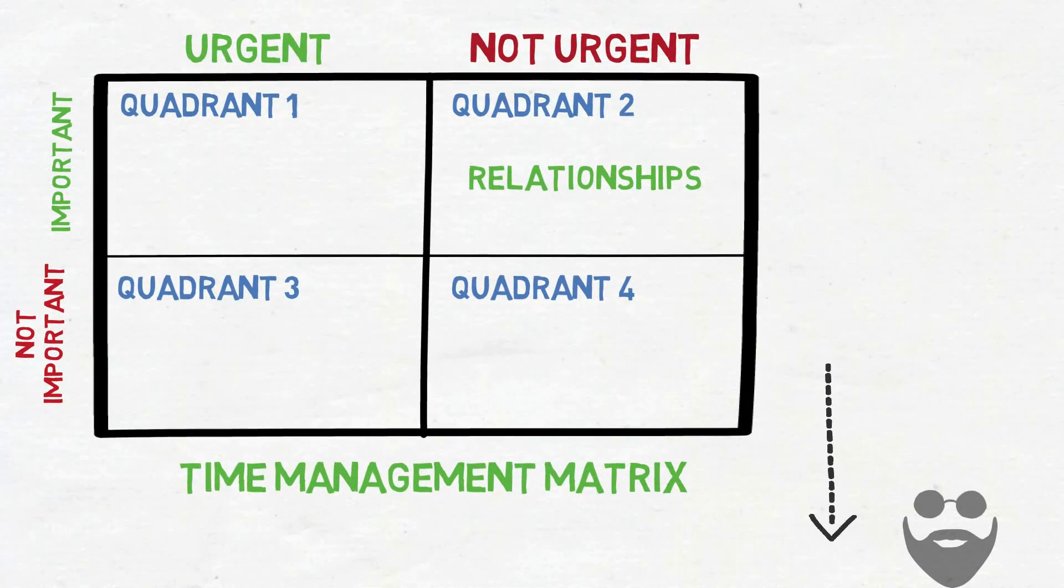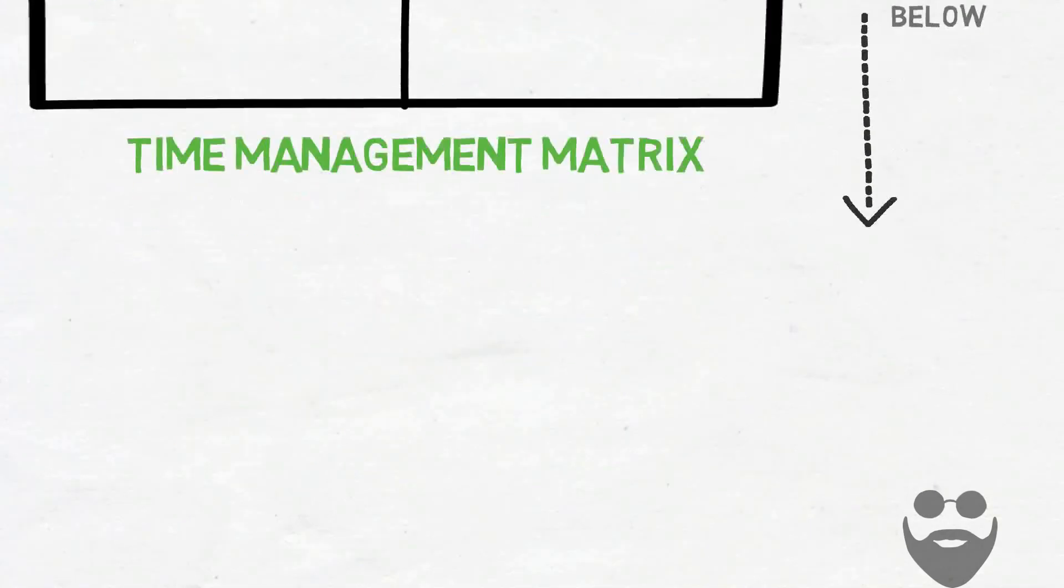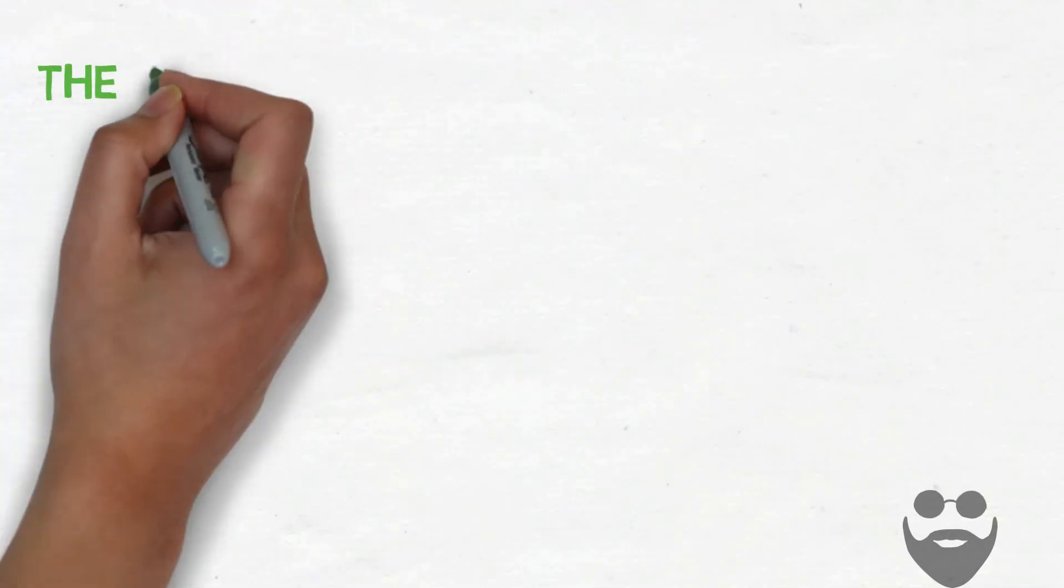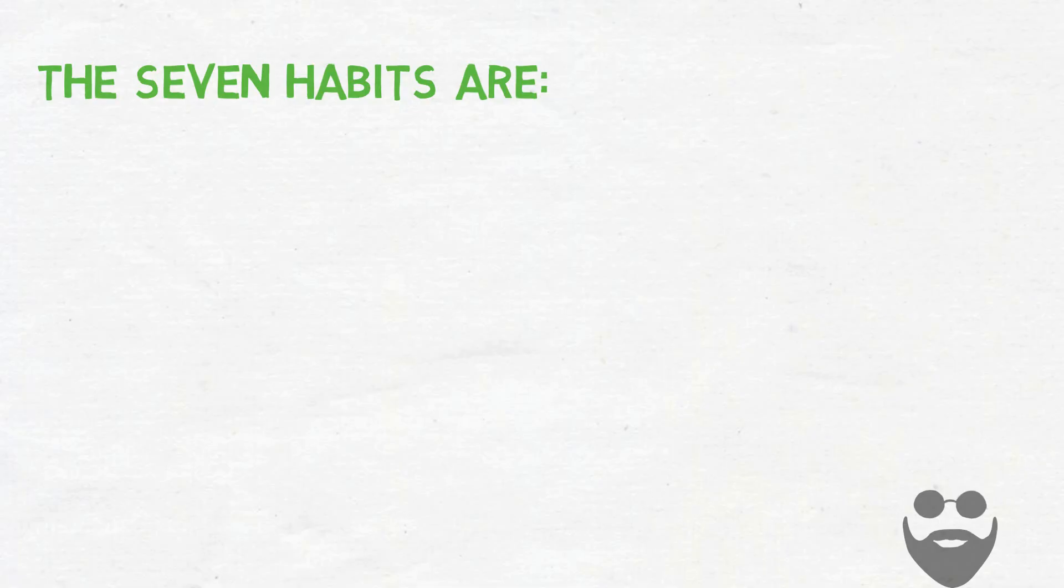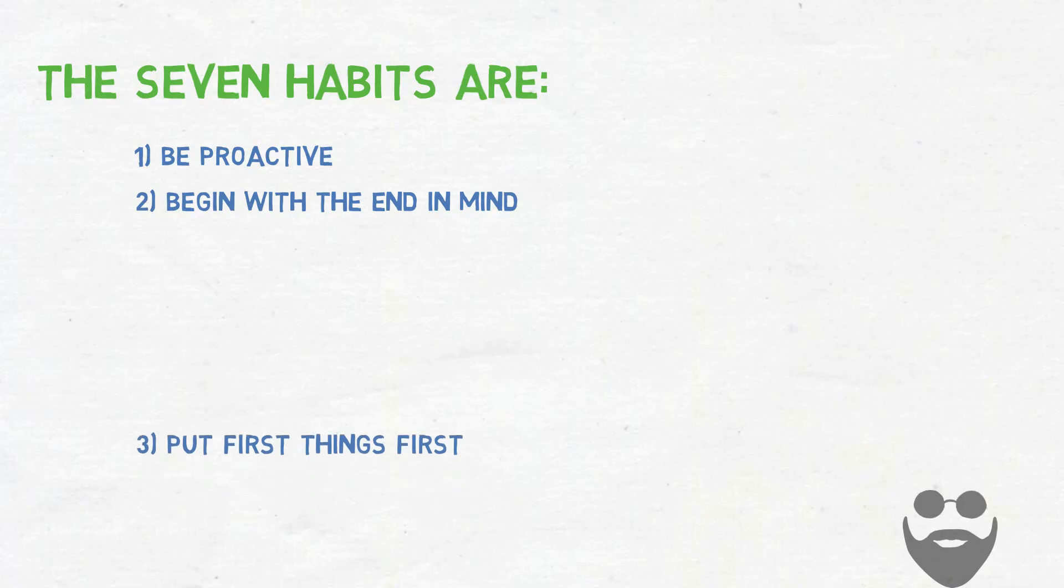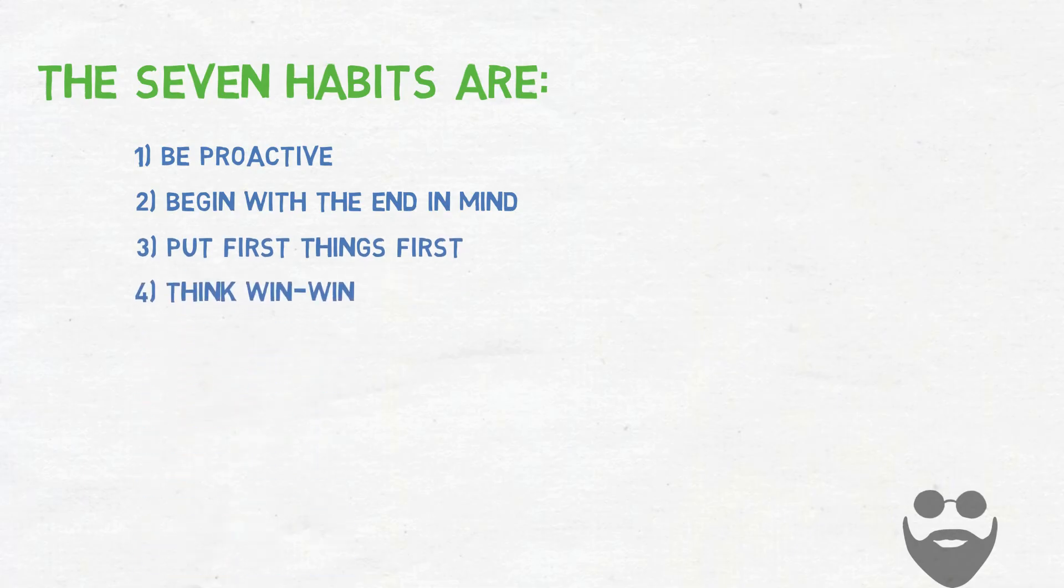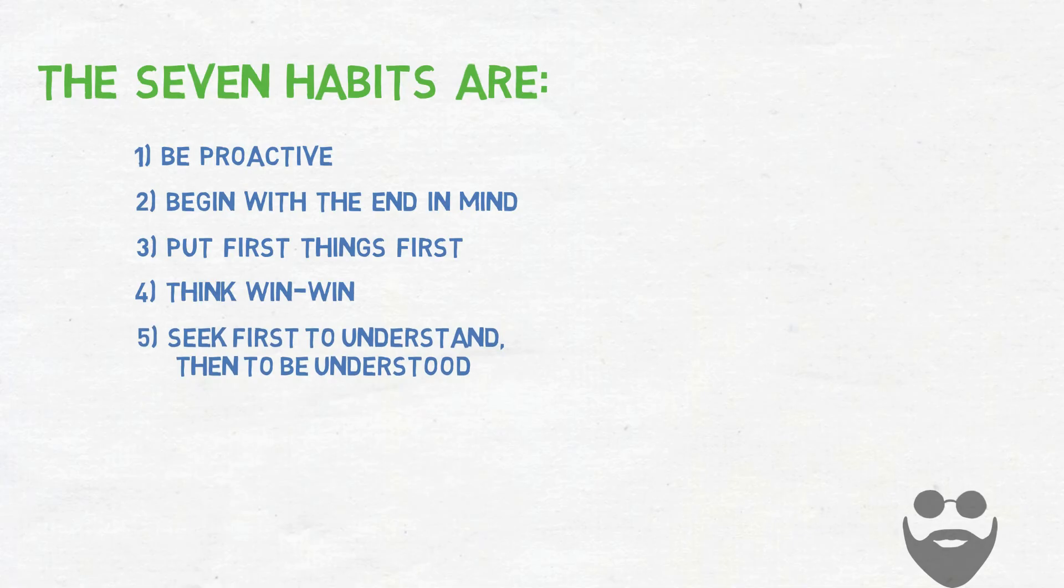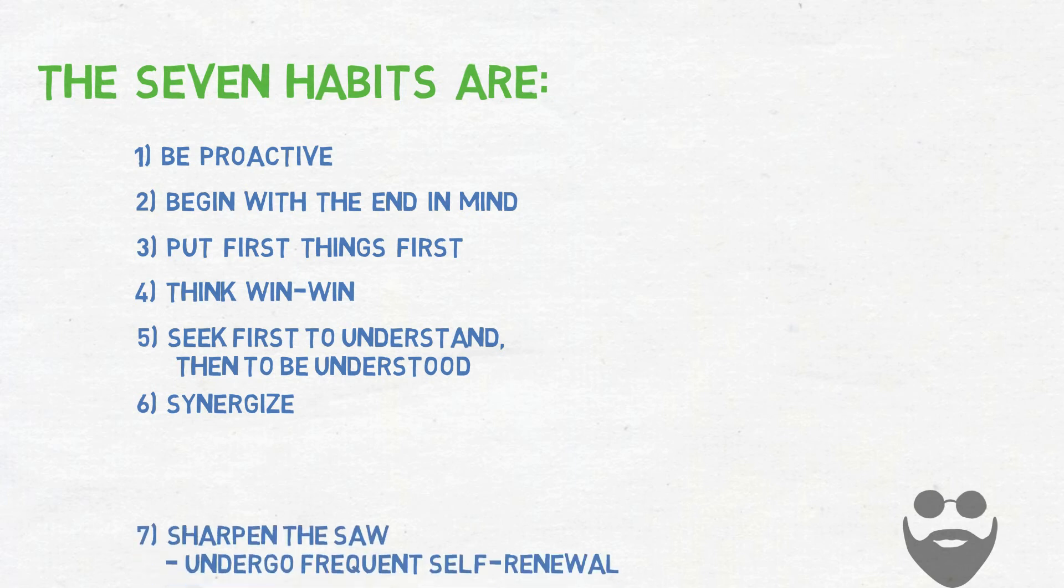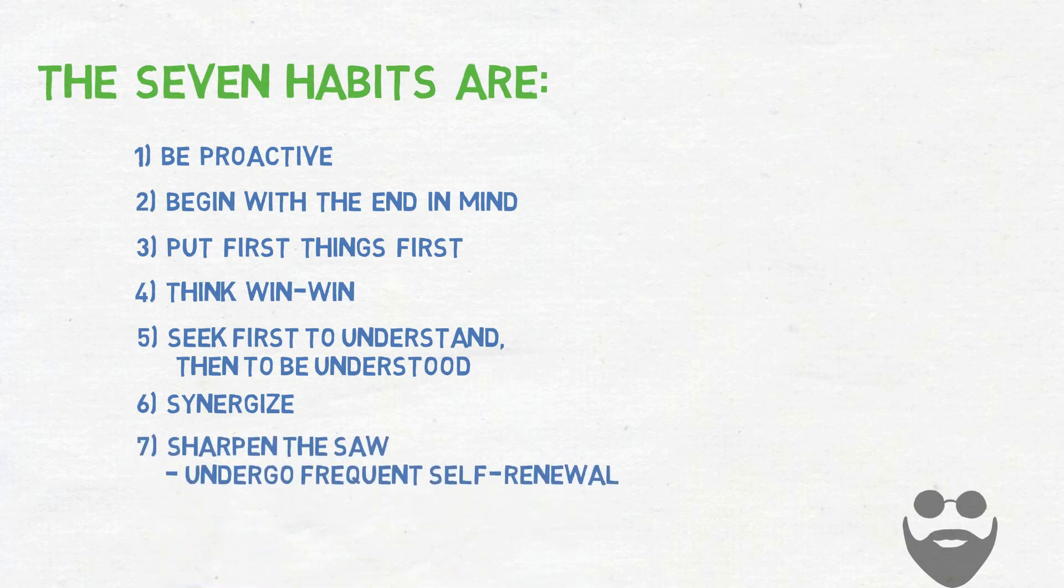The seven habits that Stephen Covey advocates in his book are: 1. Be proactive 2. Begin with the end in mind 3. Put first things first 4. Think win-win 5. Seek first to understand, then to be understood 6. Synergize 7. Sharpen the saw.